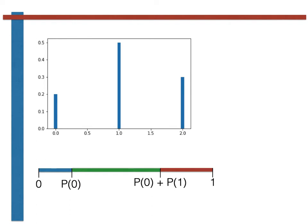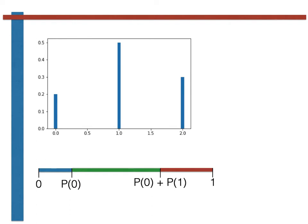In our code for generating a random variable from this distribution, we start by generating a uniform continuous random variable between 0 and 1. As this variable has a uniform distribution, the probability that it falls within the blue segment of the line is proportional to the length of the blue segment, which is the probability of getting a 0. We thus check if our uniform random variable is less than the probability of getting a 0, and if it is, we return the value of the random variable as 0.